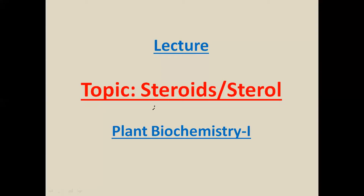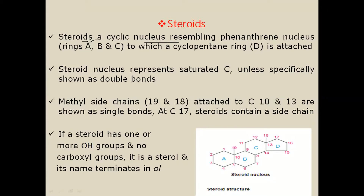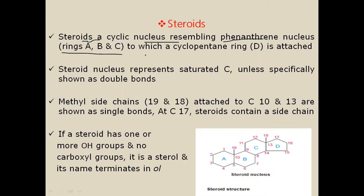In this lecture we will discuss different types of steroids and sterols. A steroid contains a cyclic nucleus which resembles a phenanthrene nucleus, consisting of ring A, ring B, and ring C. To this phenanthrene nucleus is attached a cyclopentane ring designated as ring D, which contains five carbons.